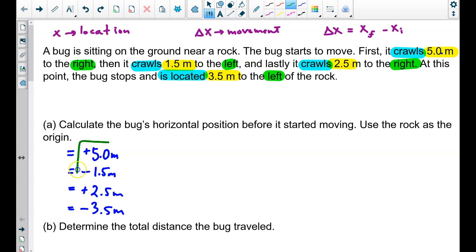Notice, the first three values all were referred to using the word crawl. There it is again, crawl. And then, again here, crawl. Because the bug is moving, these are displacements, changes in position. When the bug crawls, its position changes.